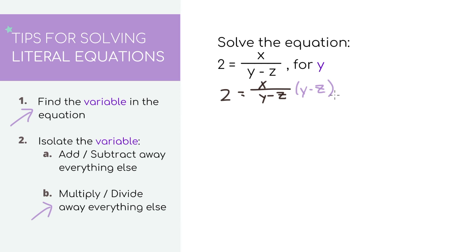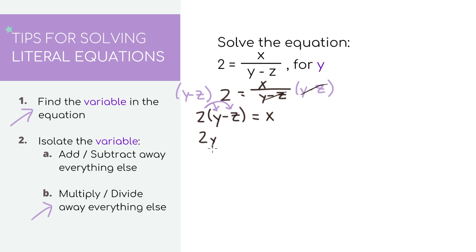On the right side, the denominator cancels out what we've multiplied, so we're just left with x and we don't have any fractions. On the left side, we have 2 times (y minus c), and we do need to distribute. The first thing we'll do is multiply 2 times y, then distribute again: 2 times negative z gives us negative 2z. So we have 2y minus 2z equals x.